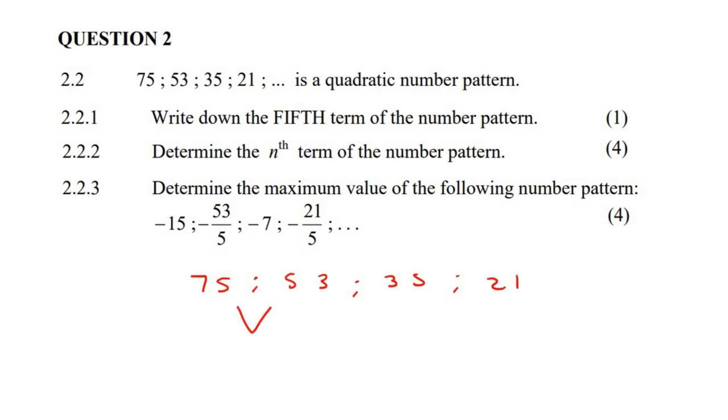If you look at the difference from the first one to the next one, you're going to say 53 take away 75, and that's negative 22. Don't say positive 22, it's negative 22, and then 35 take away 53 is negative 18, and then 21 take away 35 is negative 14. Now to work out the second difference, because that's what a quadratic is, you're going to take this one minus this one. It's always the one on the right, take away the one on the left, and so that's going to end up being a 4, and then this one would also be a 4.